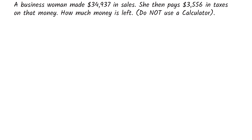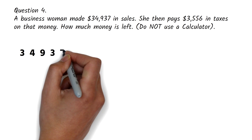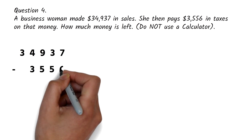Question 4. A businesswoman made $34,937 in sales. She then pays $3,556 in taxes on that money. How much money is left? Do not use a calculator. This is a typical subtraction question. You are supposed to subtract $3,556 from $34,937. Like we did in addition, you'll have to align the values from the unit column — that's aligning from the right. So we have $34,937 minus $3,556.